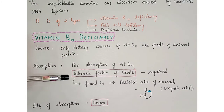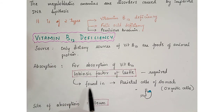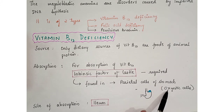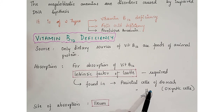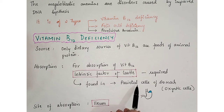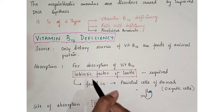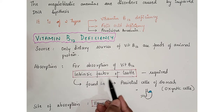For absorption of Vitamin B12, remember the intrinsic factor of Castle. This factor is produced by parietal cells of the stomach, also called oxyntic cells, which are mainly found in the fundus area of the stomach. Among the various cells lining the stomach, the parietal cell — located primarily in the fundus region — secretes the intrinsic factor of Castle.